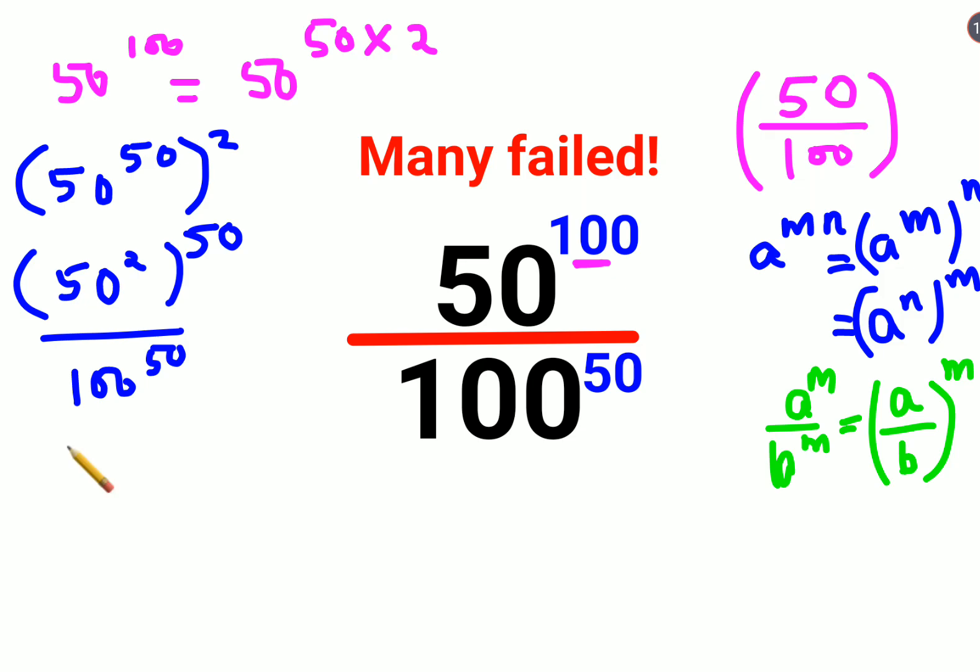So similarly I can write this as 50 square can be written as 50 into 50 upon 100. Everything is now raised to 50. And now if you see things are cancelling.